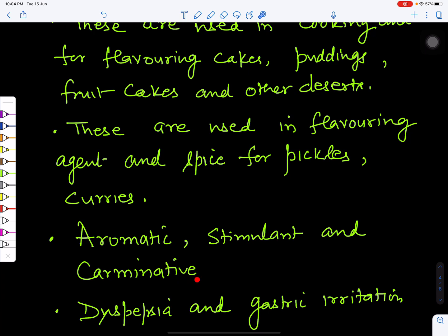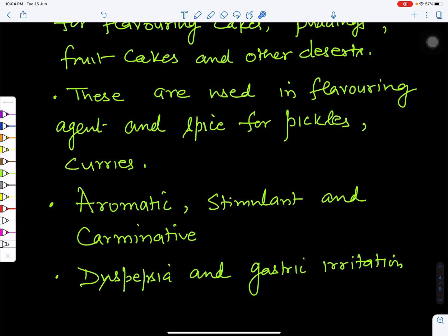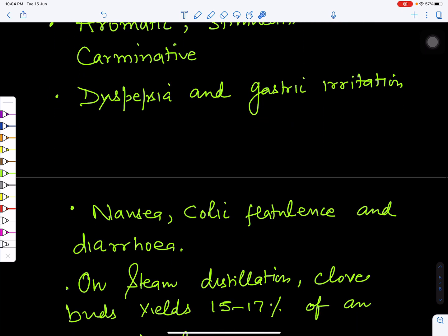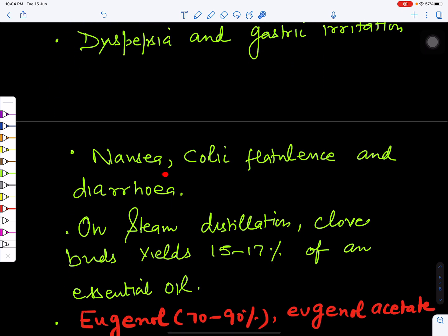This helps in treatment of dyspepsia and gastric irritation. If there is burning sensation in the stomach, nausea sensation, fullness sensation, or digestion problems, clove can treat those problems. This is also used for treatment of nausea, colic, flatulence and diarrhea.